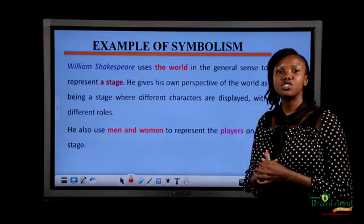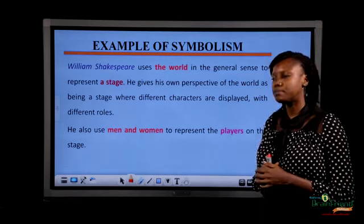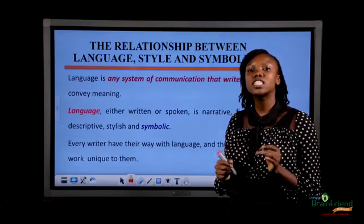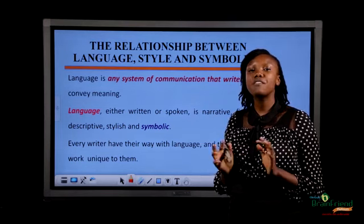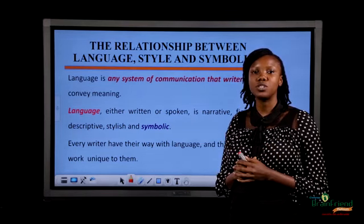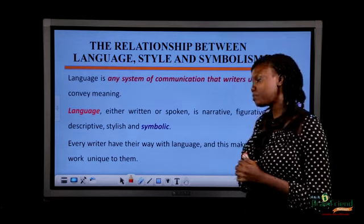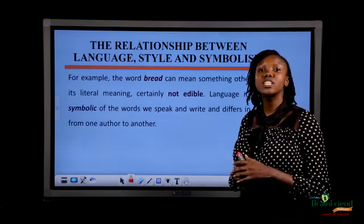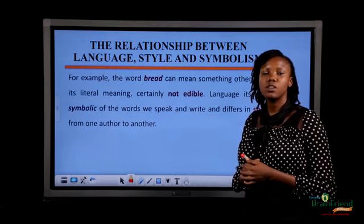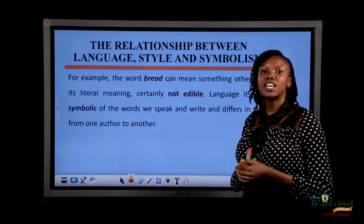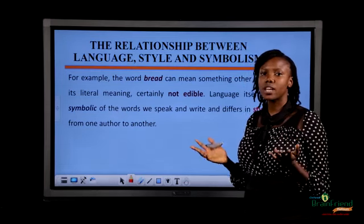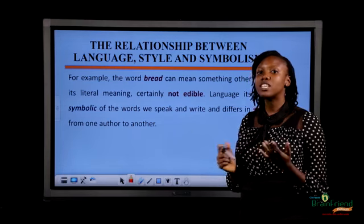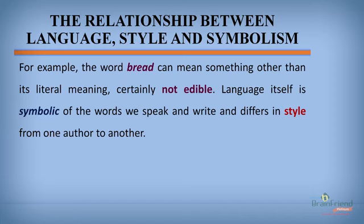Now let's look at the relationship between language, style, and symbolism. Language is symbolic in nature. It is a system of communication used by writers to convey meaning. A writer can have different styles of using language. For example, an author can use the word 'bread' to mean something different from its literal meaning, which is edible. The writer can decide to use 'bread' to refer to money or something else. Therefore, language is symbolic to the words we speak or write, and it also differs from one author to another — which is the style of the author.